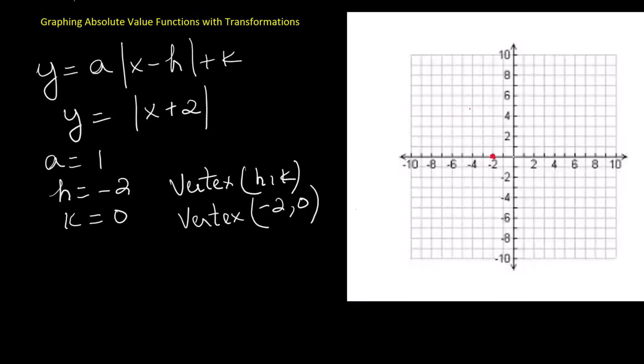Now let's use the slope to plot more points. Since the slope is 1, from the vertex we go up one unit and to the right one unit to get another point. From the vertex we also go up one unit and to the left one unit to get a matching point. When we connect these points, the graph makes a V-shape that opens upward.